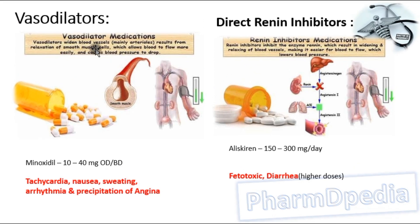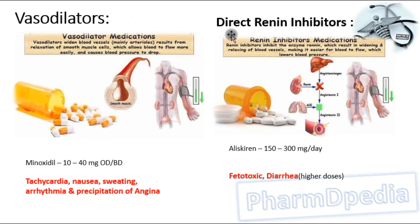Vasodilators — vasodilation of blood vessels allows blood to flow easily, causing blood pressure to drop. Example: minoxidil, 10 to 40 mg per day or twice a day. Adverse reactions include tachycardia, nausea, vomiting, arrhythmia, and precipitation of angina.